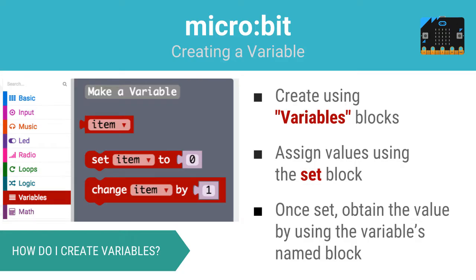Creating variables using MicroBit blocks is simple. Simply go to the variables tray and click on make a variable. From there, you can change, or in other words set, the values of your variables using the provided set and change blocks. Once you create a variable, you will find that a variable block with its name has been created in the tray. This named variable block can be used as necessary in your program to obtain the variable's current value.